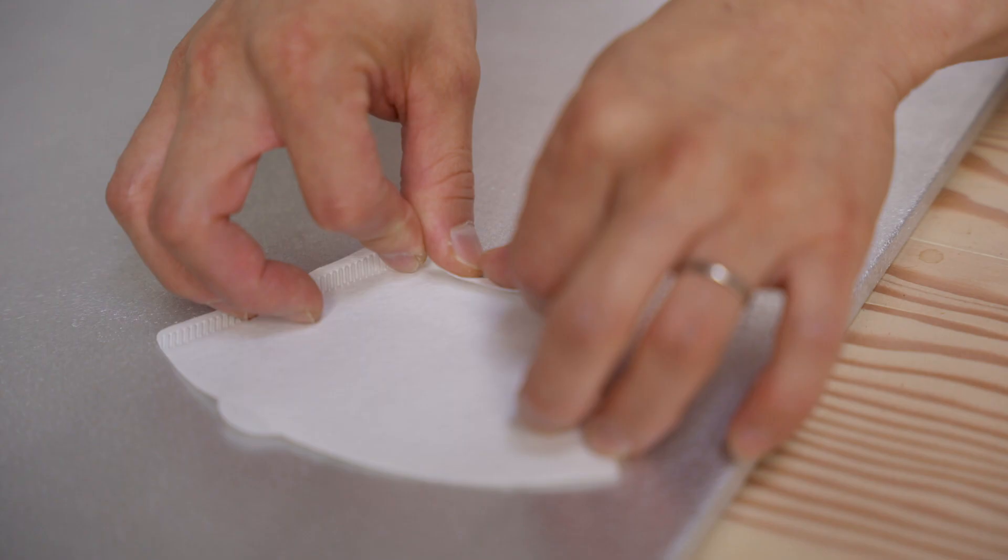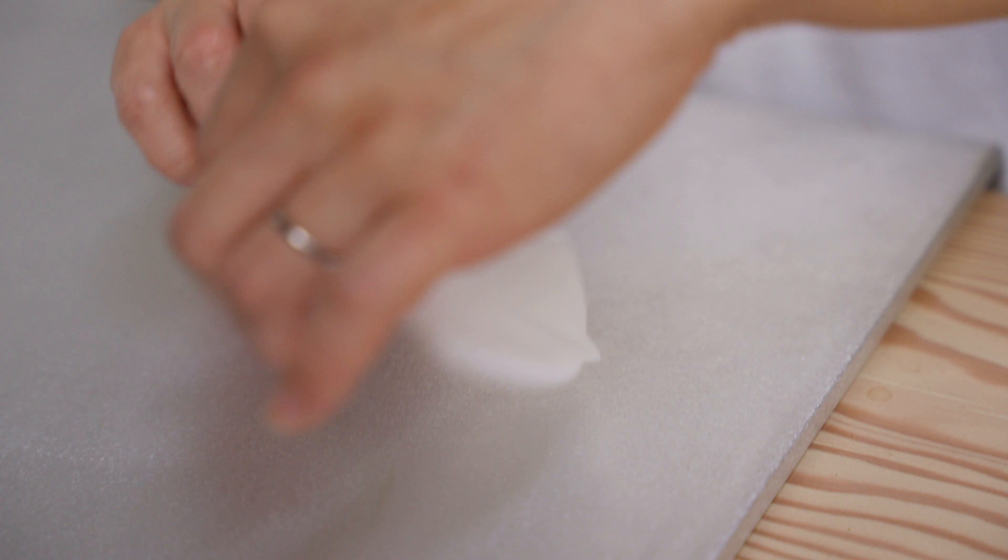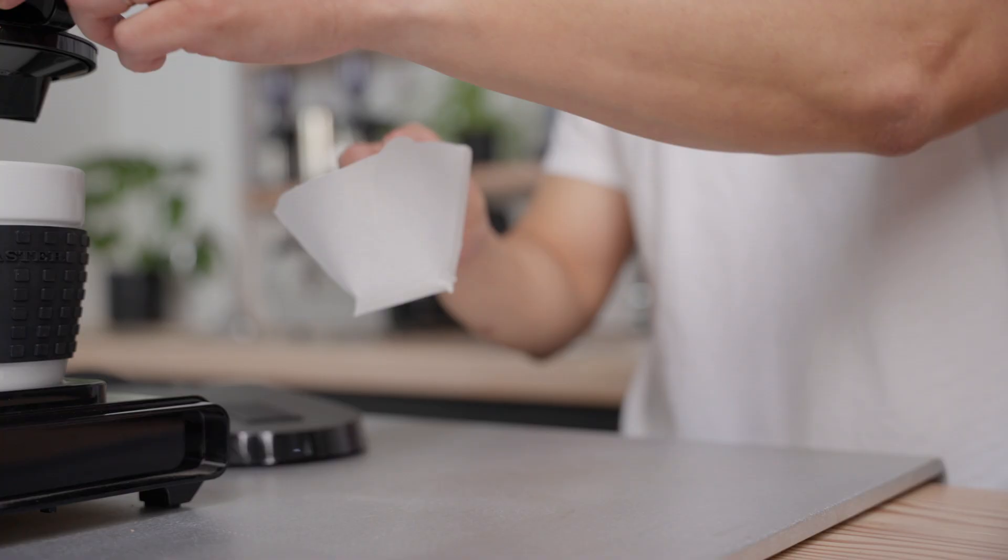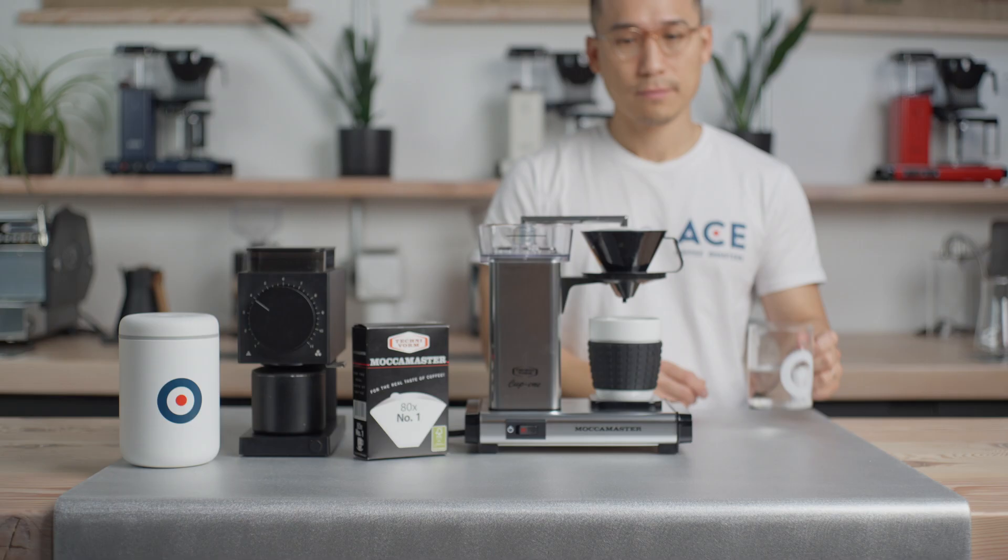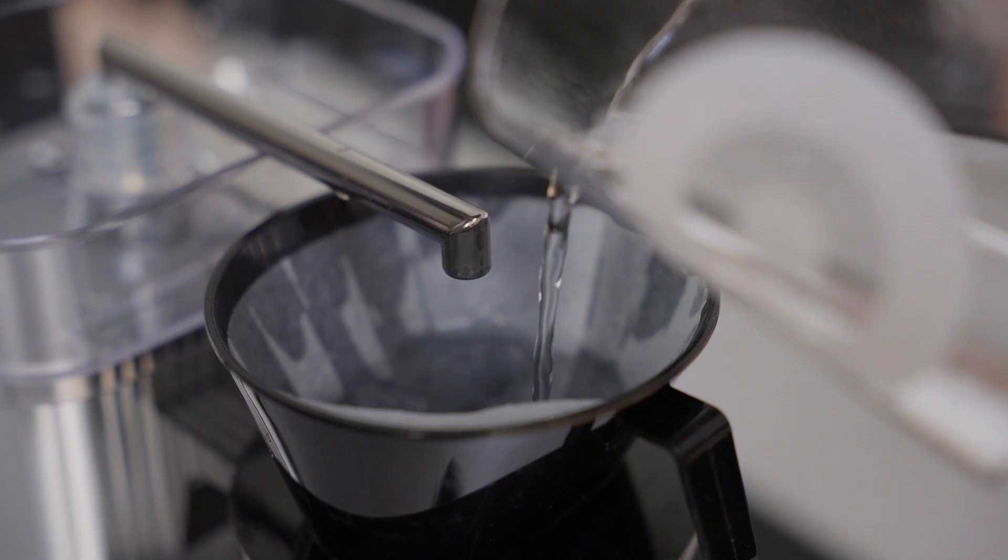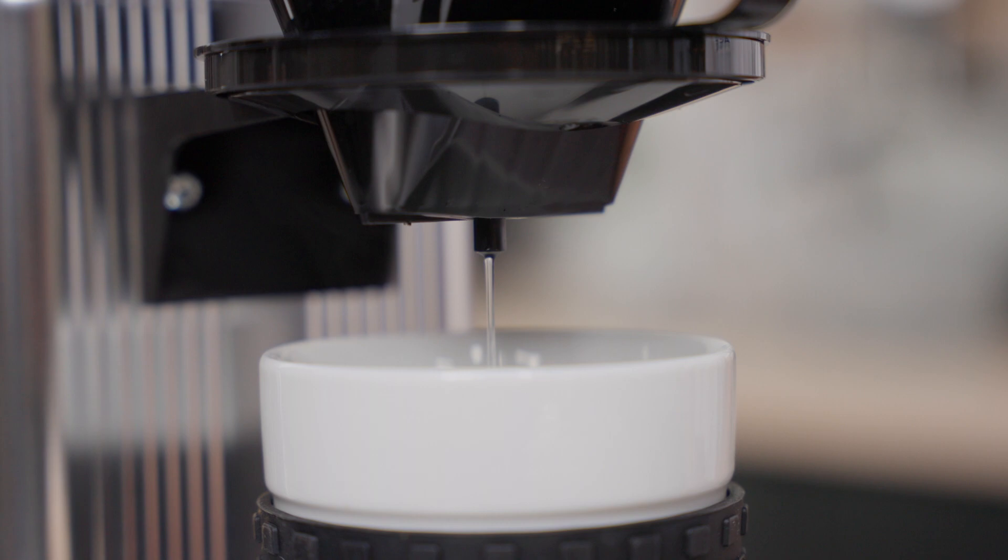We will fold the filter along the lines and then pre-wet it by simply running water through it after placing it in the cone. We will then want to rinse the paper filter with hot water. We do this to remove the paper taste and to heat the brewer. We will then discard the water.